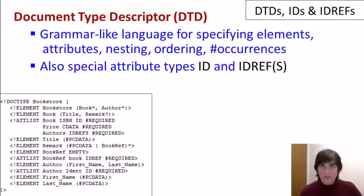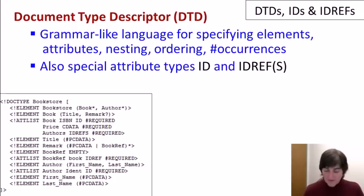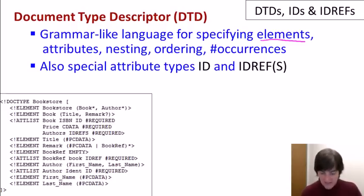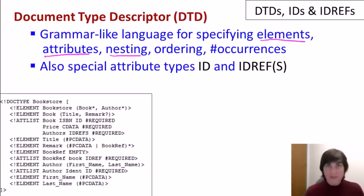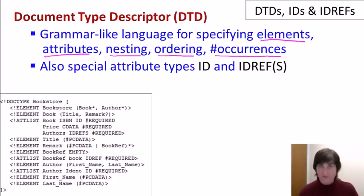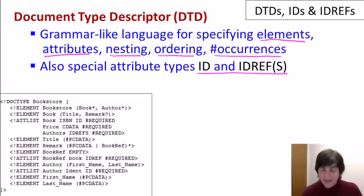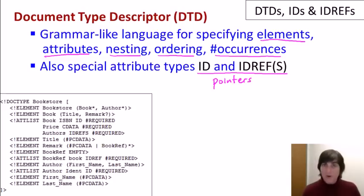Now let's talk about document type descriptors, or DTDs. A DTD is a language that's kind of like a grammar. What you can specify is, for a particular document, what elements you want it to contain, the tags of the elements, what attributes can be in the elements, how the different types of elements can be nested, sometimes the ordering of elements, and sometimes the number of occurrences. DTDs also allow the introduction of special types of attributes called ID and IDREFs, which effectively allow you to specify pointers within a document, although these pointers are untyped.